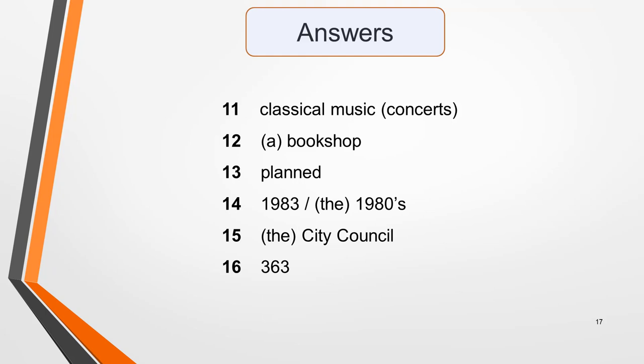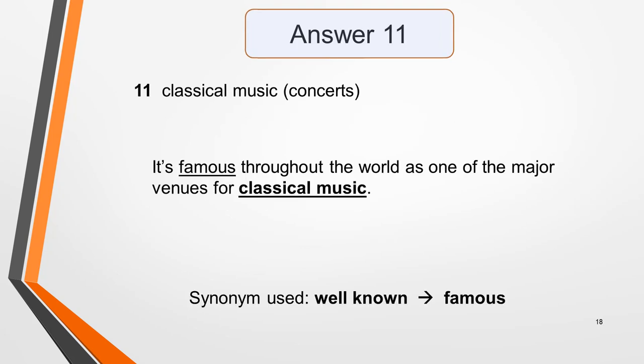Here are the correct answers — the words in brackets are optional. Pause the video while you check them against your own, then we'll go through them one at a time. Answer 11 is 'classical music' or 'concerts.' Here's the sentence this answer appears in: 'It's famous throughout the world as one of the major venues for classical music.' A synonym has been used here — 'famous' instead of 'well known.'